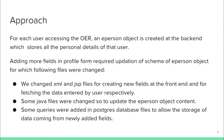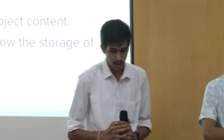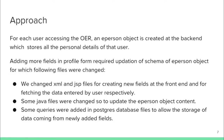The approach was: for each user accessing the OER, an e-person object is created in the backend. We updated the schema for that e-person object. XML and JSP files were changed to create new fields at the front end and to fetch data entered by users. Java files were changed to update the e-person object content. Additional queries were made in the PostgreSQL database files to allow storage of the newly updated fields.